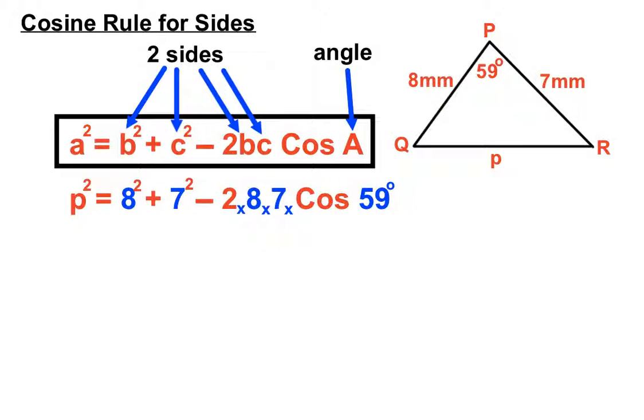OK, so that's the substitution of all the numbers from the question. You notice we've put two sides in here and here, and the same two sides in there and there, and the angle at the end there after the cos. So we're just substituting those numbers in.